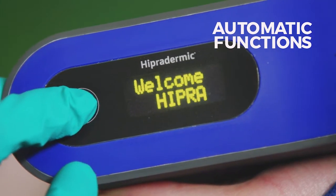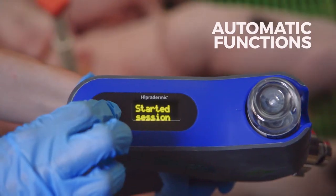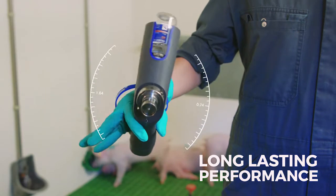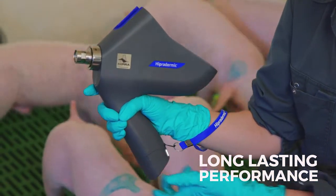Vaccination with Epidermic is very simple, as all functions are automatic or performed by just pressing the menu button. Its balanced design and long-lasting batteries give a non-stop autonomy of more than 2,000 animals for a full day's work.